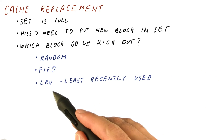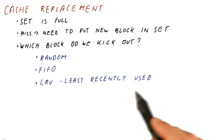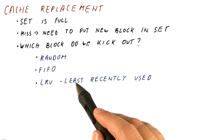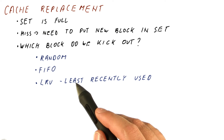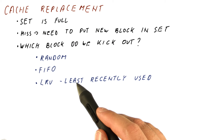The next policy is LRU, or Least Recently Used. We want to kick out the block that has not been used the longest — we definitely don't want to kick out the block that is most recently used, then the next most recently used, and so on. We track which block has been used more recently, and when we need to replace something, we choose the block that we haven't used for the longest time.